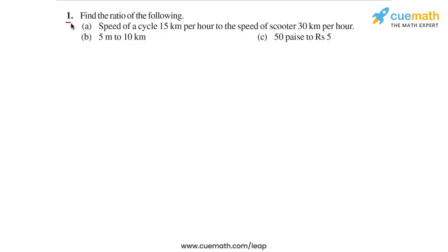In question 1 of this exercise, we have to find the ratio of the following. We have three parts given to us. In each part, there are two quantities given, and we have to find the ratio of those two quantities. Let's start with part A.